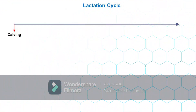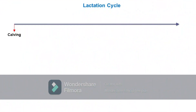After calving, the cow starts to produce milk. After reaching peak of production at about 4 to 6 weeks after calving, milk production gradually declines, then dries up at around 305 days post-calving.